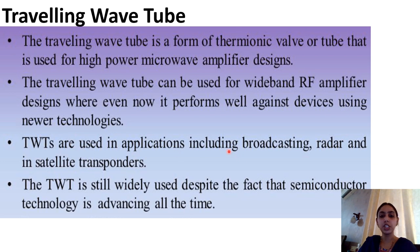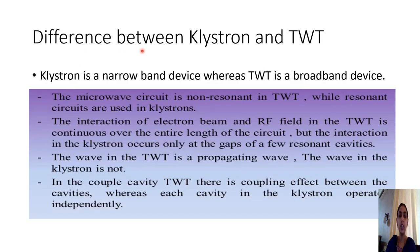The TWT finds many applications including broadcasting, radar, and satellite transponders. Even though klystron and traveling wave tube are both O-type or original type tubes — in which the electric field and magnetic field are in step with each other — there are large differences between these two types of amplifiers.